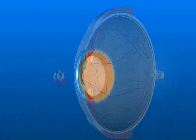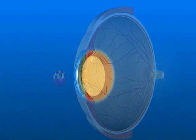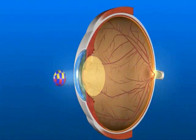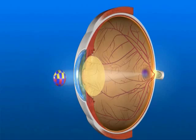As a cataract forms, the lens gradually becomes cloudy. As light passes through this cloudy lens, it is no longer clearly focused on the retina, causing images to appear hazy or blurred.